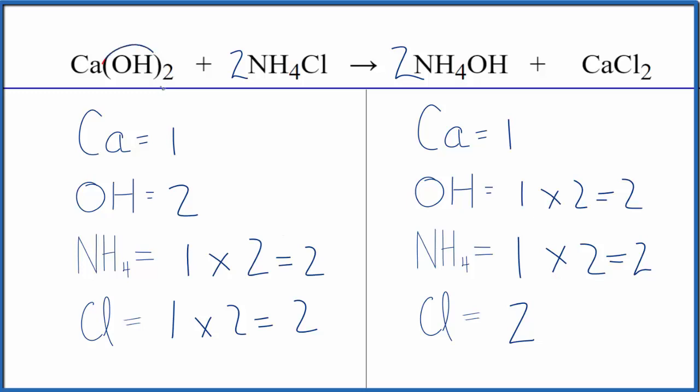So you can see when we count these polyatomic ions as one thing, as long as we have them on both sides, it makes it a lot easier to balance, saves you time. And that's important on exams.